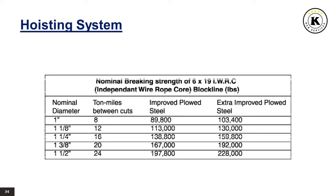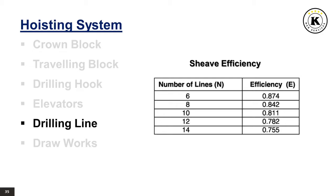The strength table of the drilling line serves as a crucial reference for assessing the cable's load-bearing capacity and durability, providing detailed information on tensile strength, weight, and other essential characteristics. Rig operators rely on this data to ensure safe and efficient execution of drilling activities. The sheave efficiency table outlines the efficiency ratings of individual sheaves within the pulley system, shedding light on their ability to minimize friction and optimize mechanical advantage during lifting operations, helping rig personnel maximize efficiency and minimize energy loss in the overall hoisting process.